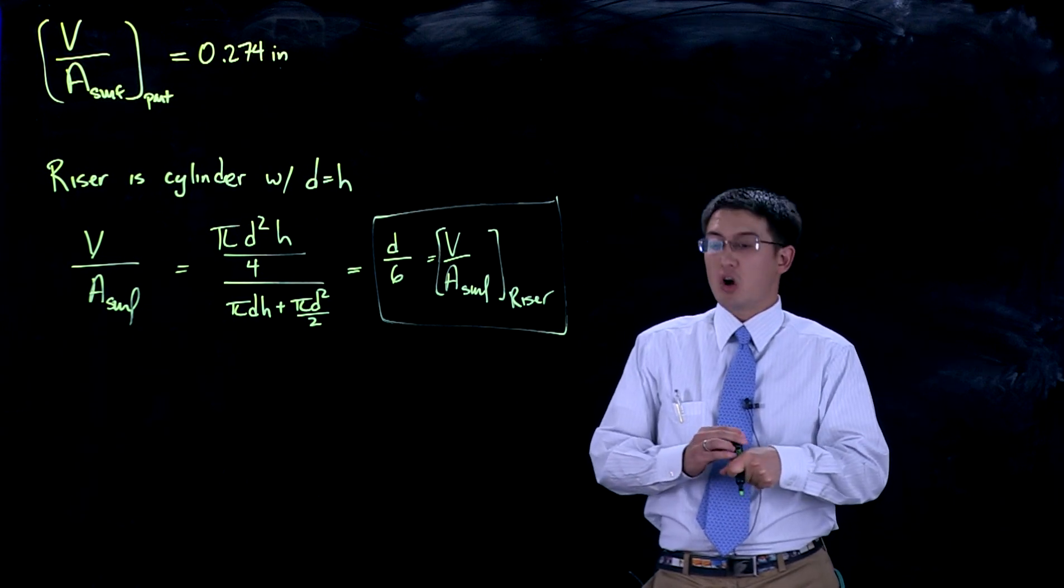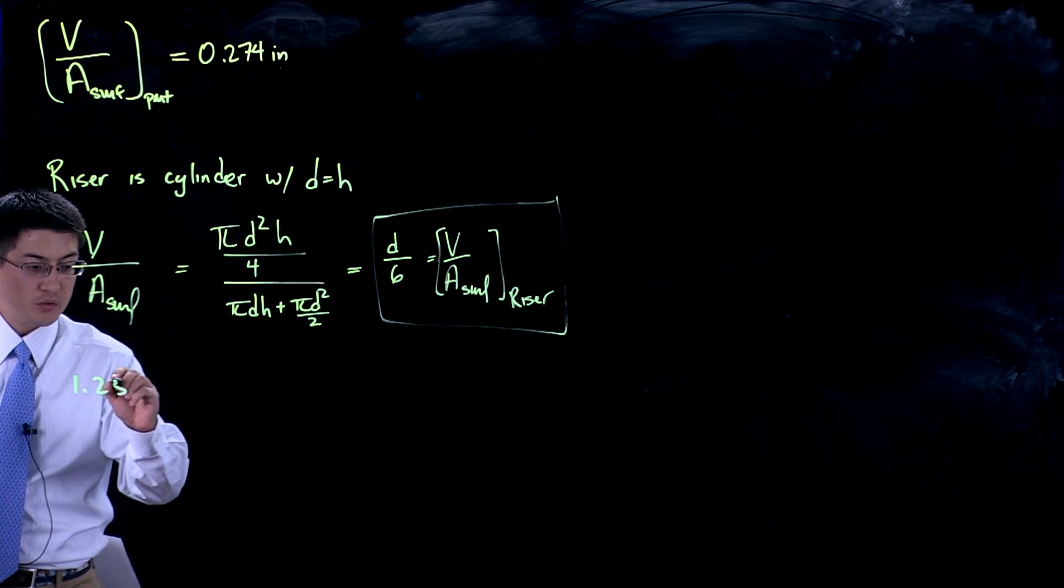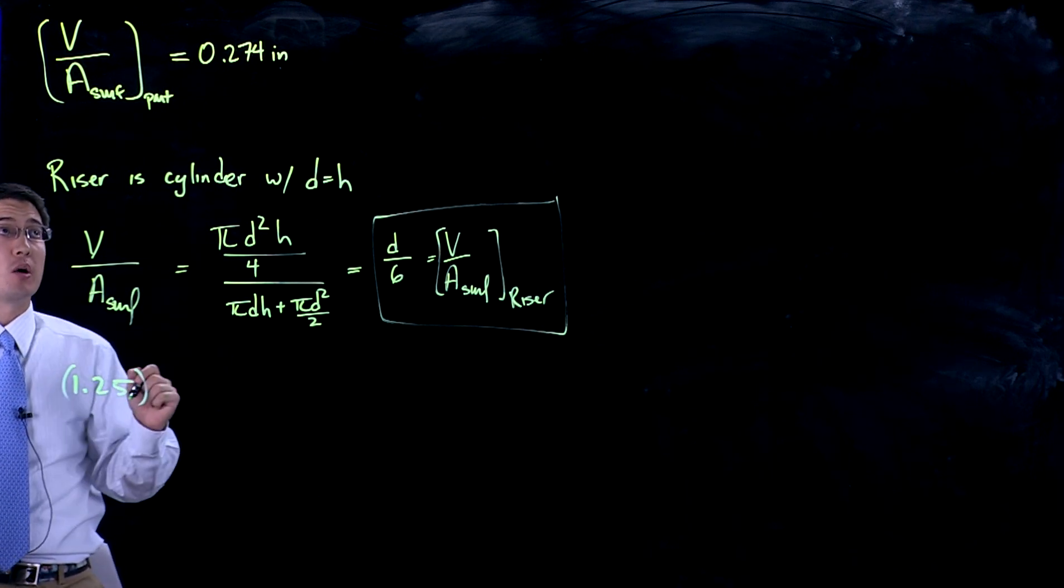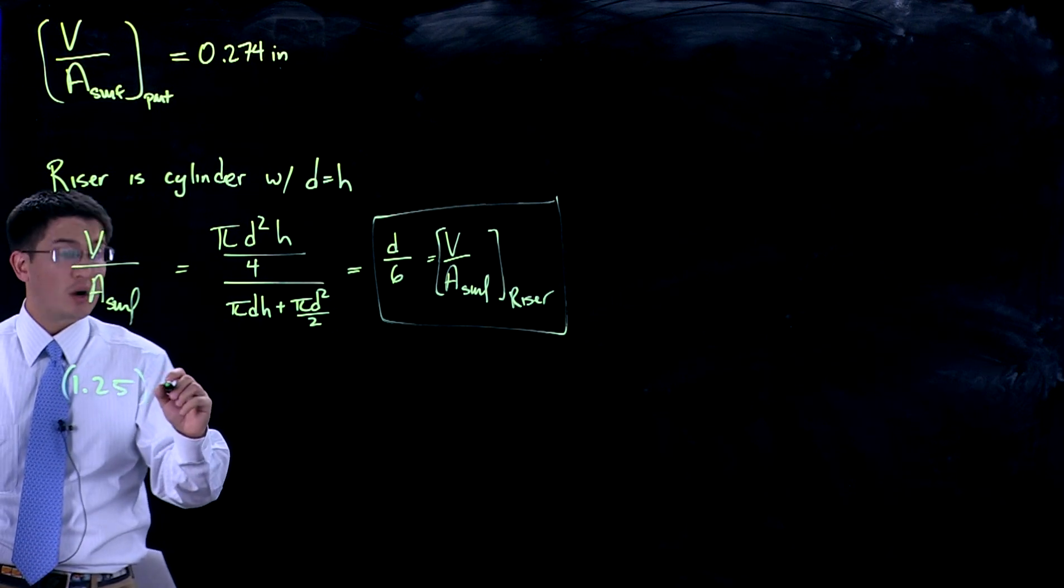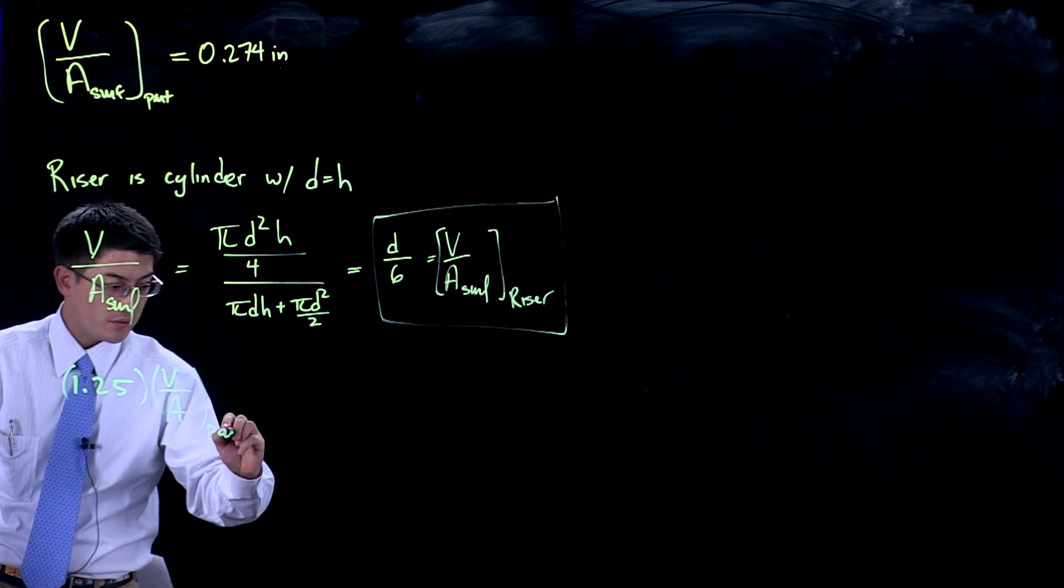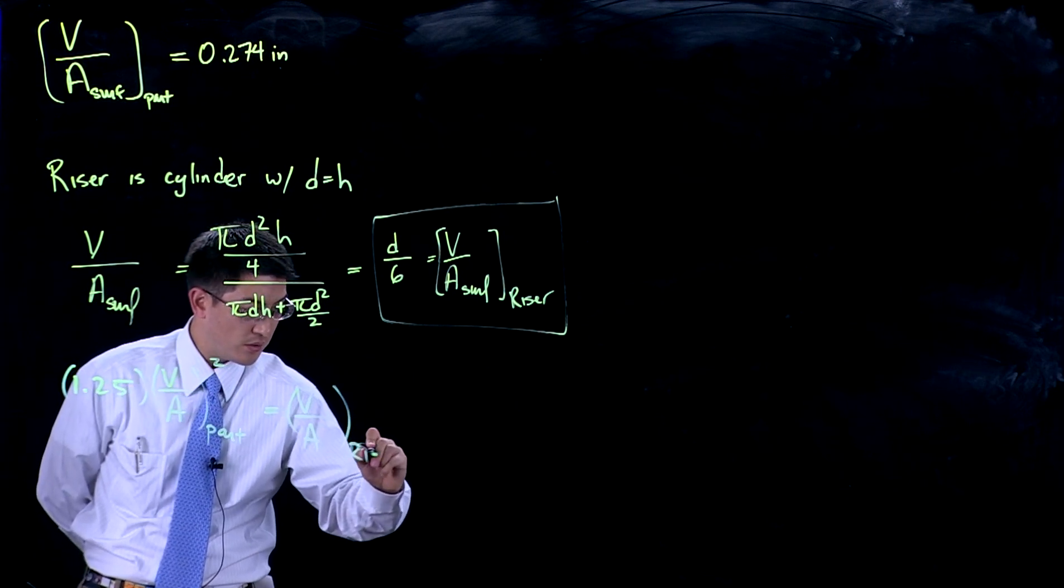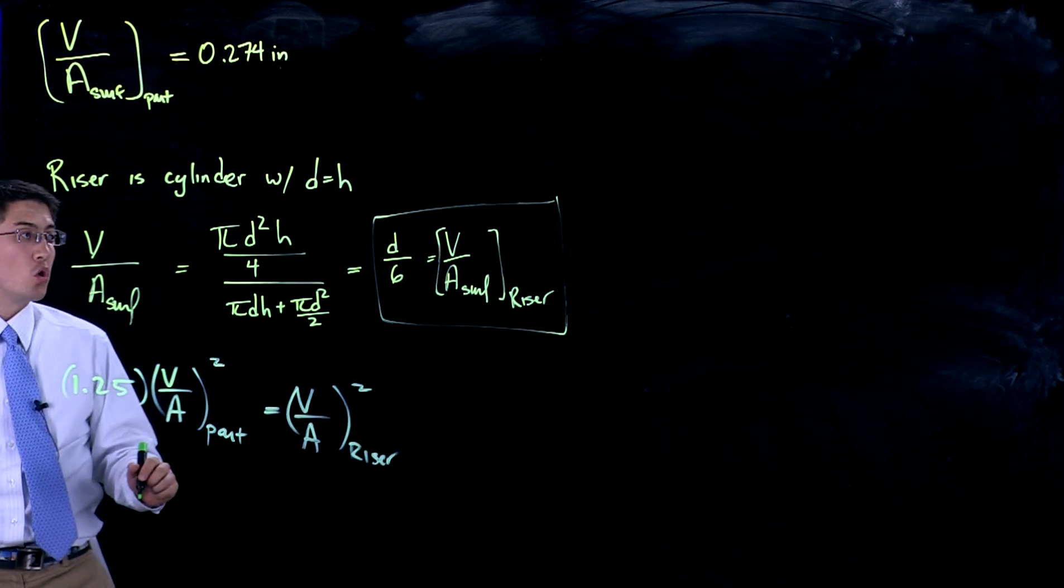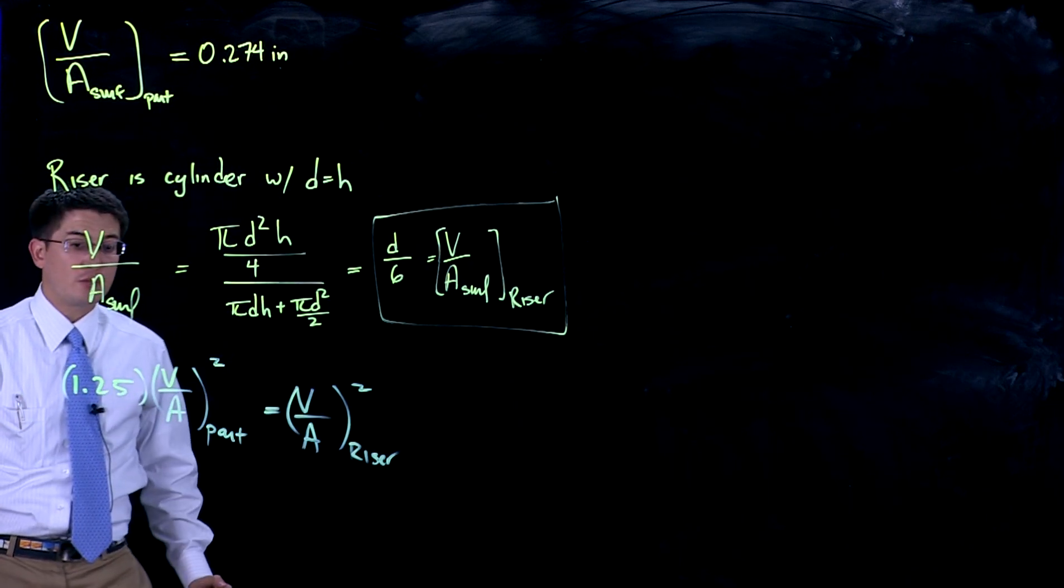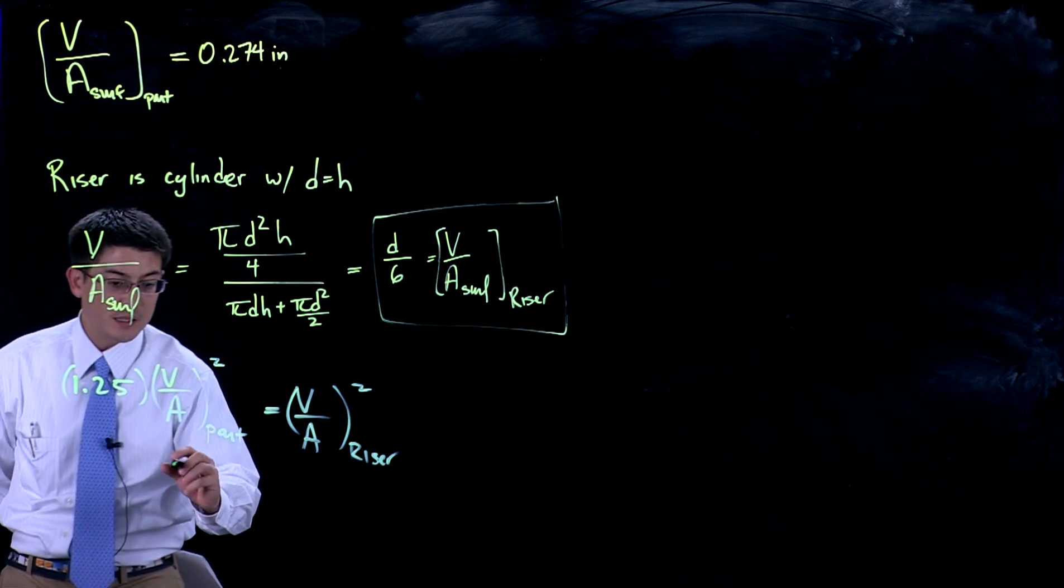Going back to Schwornov's rule, we had an expression that said we want 1.25, so 25 percent longer for our solidification time of our part, which was V over A for the part squared equals V over A for our riser squared. We now have an expression for V over A for the riser and a value for our part. We know that we want that to be 25 percent longer for the riser, so we can now plug all of these values in. This is 0.274 inch, this is d over 6, this is 1.25, and the only unknown now is the diameter of the riser.